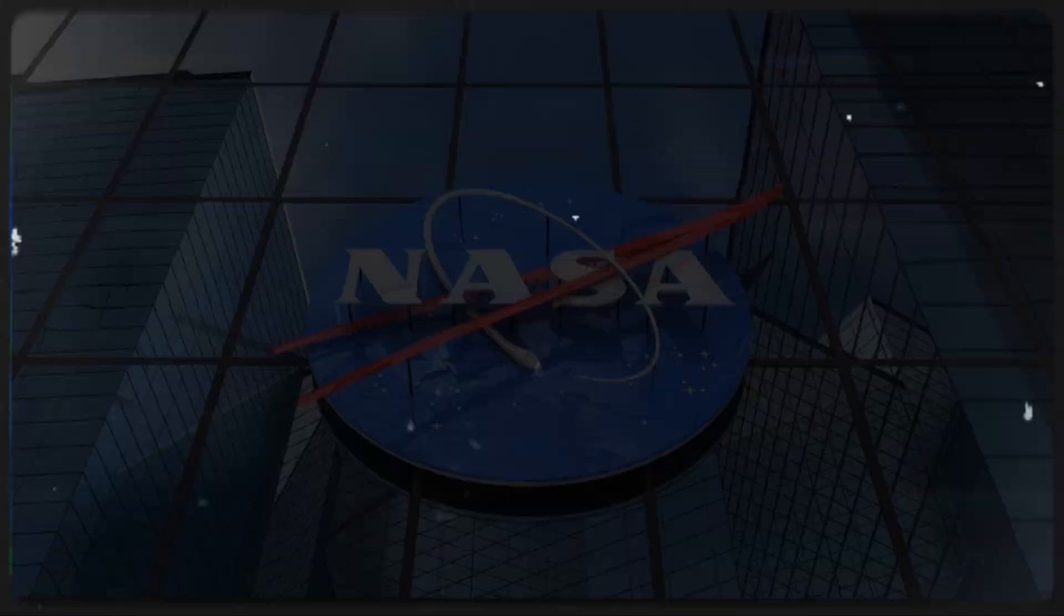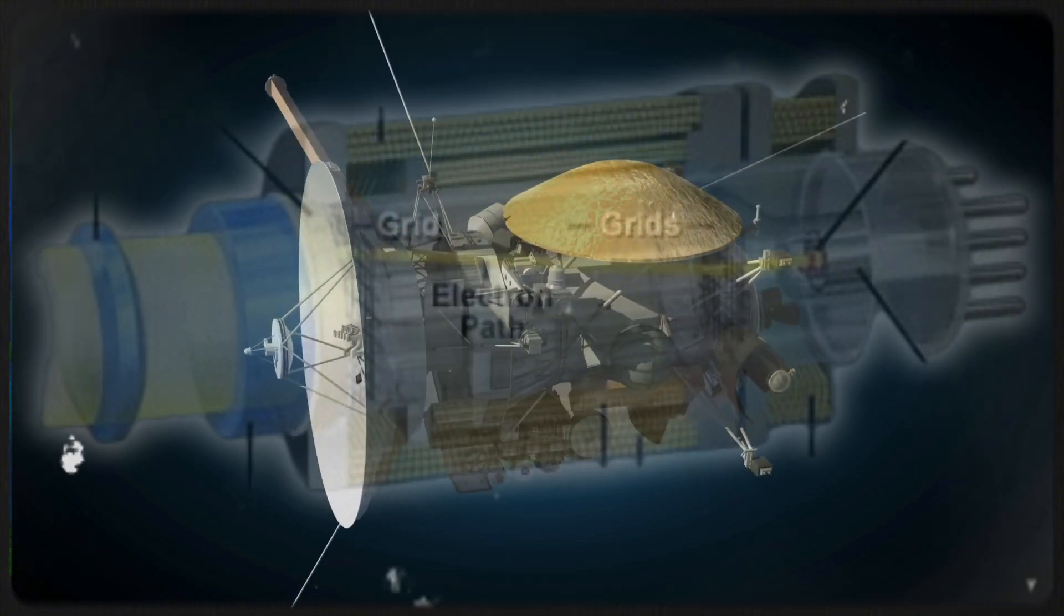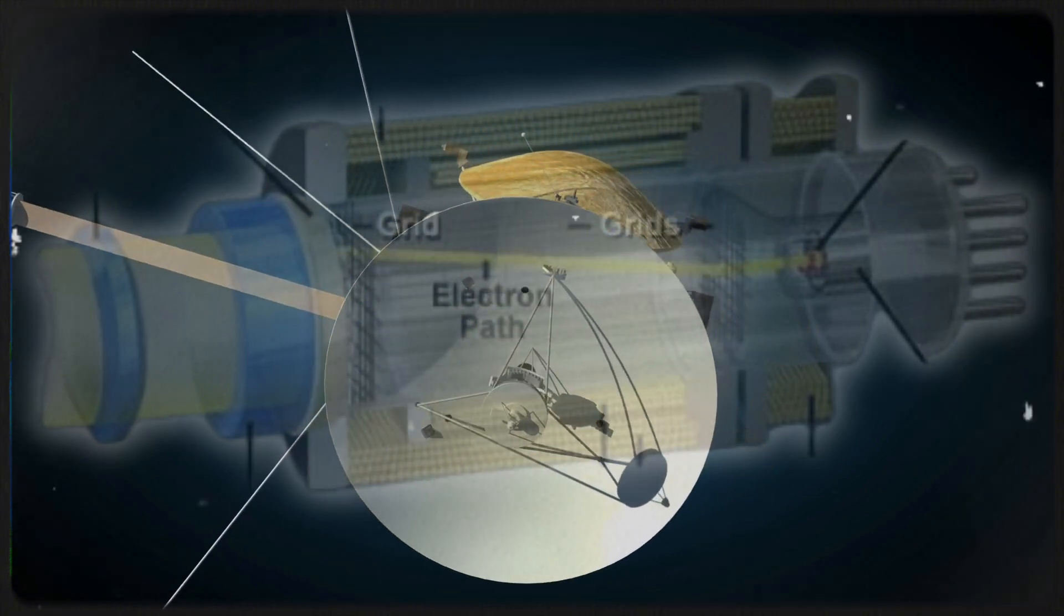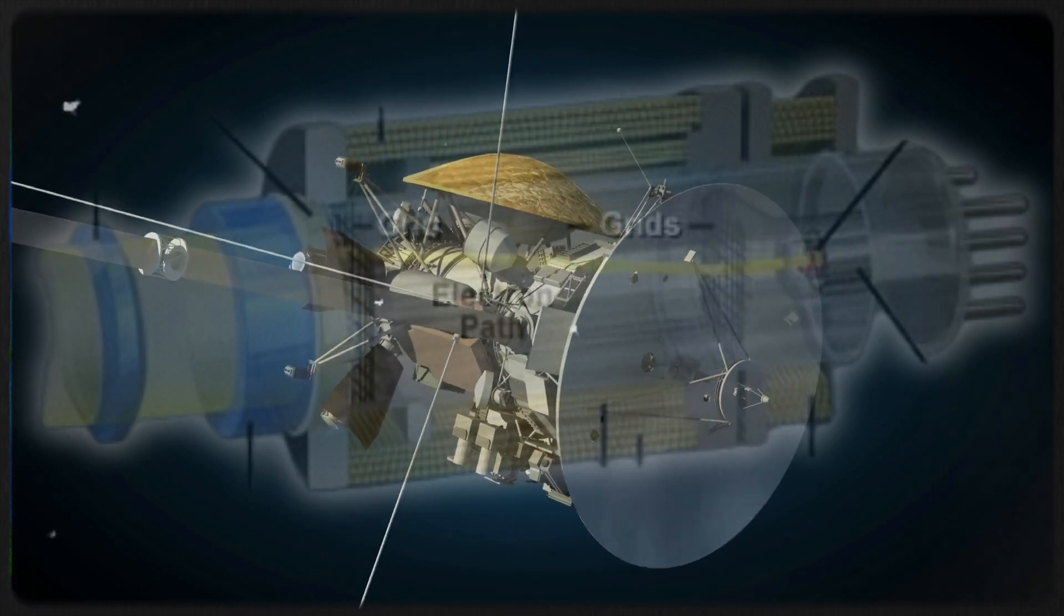NASA initially planned to turn off the cameras on both Voyagers once the grand tour was officially over, expecting no further photo opportunities beyond Neptune, just the endless void and distant stars.